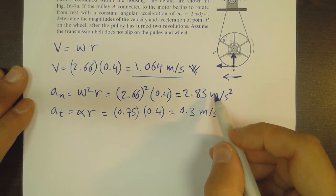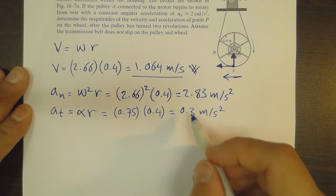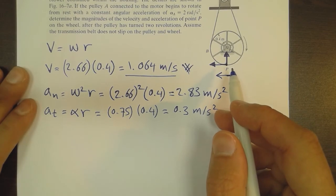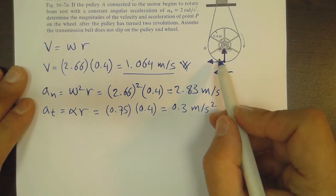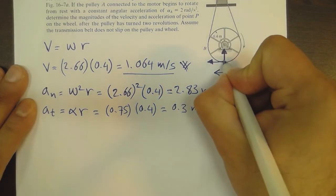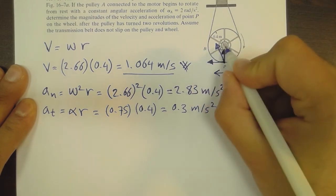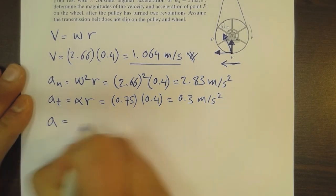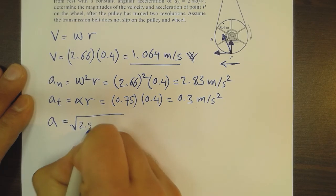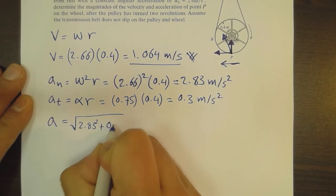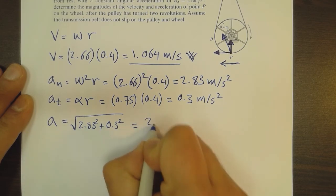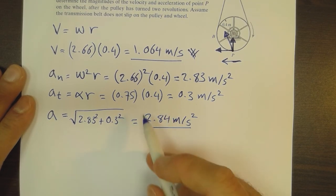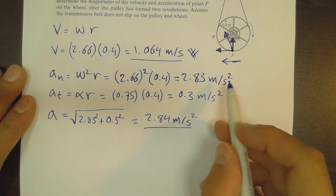You can see that the normal component of acceleration is larger than the tangential component, so the resultant acceleration will be directed closer to the normal component. The magnitude of the resultant acceleration equals the square root of 2.83 squared plus 0.3 squared, which equals 2.84 meters per second squared. You can see how close the magnitude of the resultant acceleration is to the normal component.